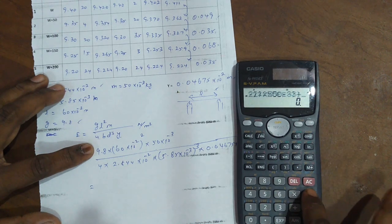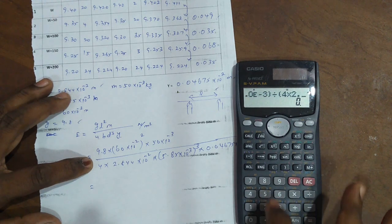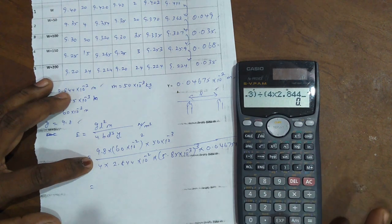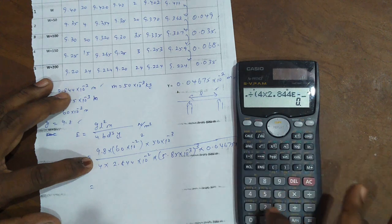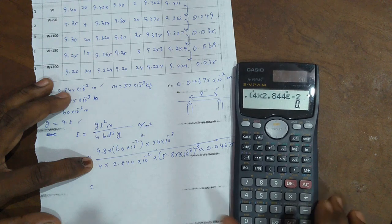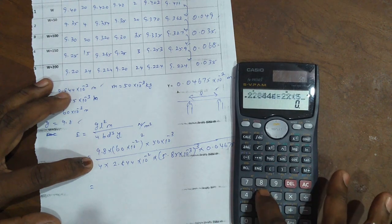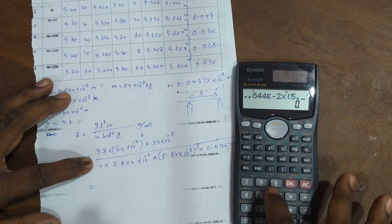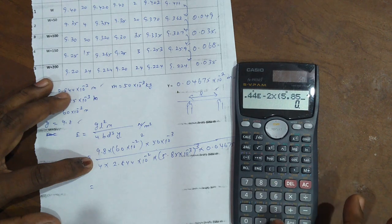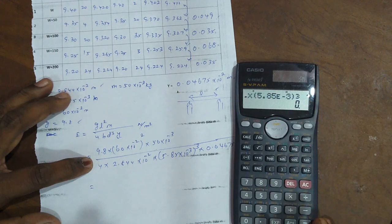Then divide by open bracket, 4 into 2.844 exponent minus 2, into open bracket, 5.85 exponent minus 3, close the bracket, whole cubed.